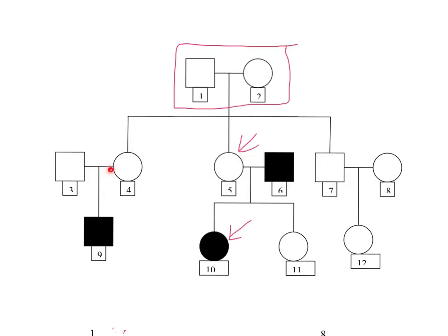Child number four married boy number three and they had one child who's number nine and he is shaded in. And then we have child five married person six. They had two children, two girls who are ten and eleven. And then we have boy number seven married girl number eight, and they had a girl number twelve.